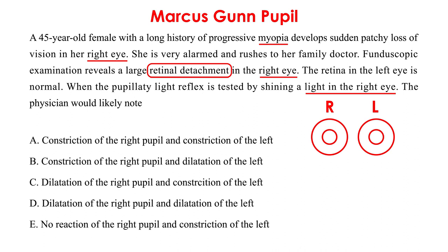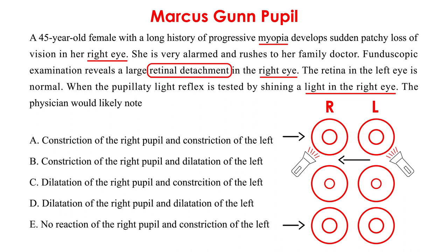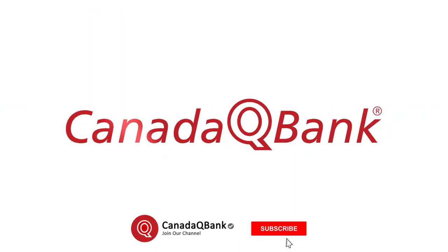You have the right eye and the left eye. The retinal detachment is in the right eye — that's where the pathology is. First, shine a light into the left eye: you get a normal response, which is constriction of the pupil in both eyes. Now swing the light over and shine it in the right eye: that would not produce constriction, so the pupils remain essentially dilated. The answer matching that is dilation of the right pupil and dilation of the left pupil — that would be choice D.